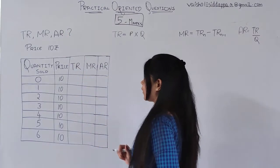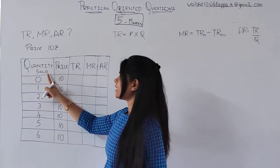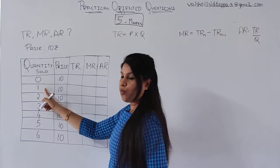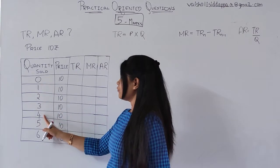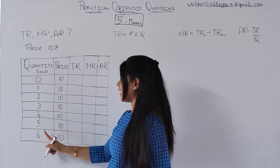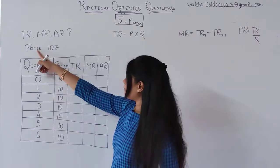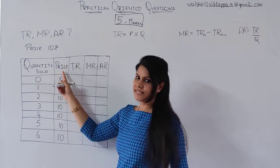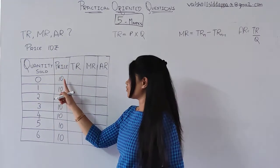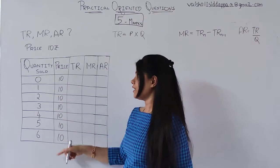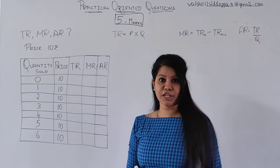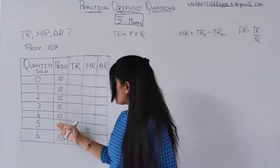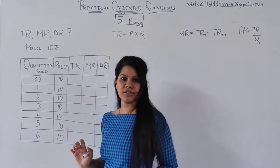How will you do it? The quantity sold they have given is 0, 1, 2, 3, 4, 5, and 6. The price given is the market price, which is 10 — and it has not changed. The price is continuously fixed at 10 all the way through.